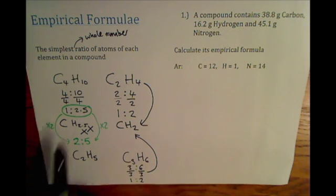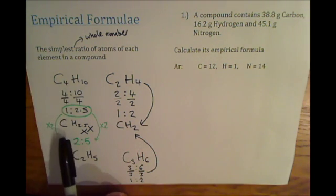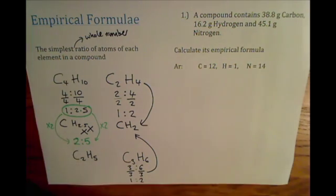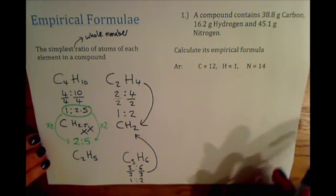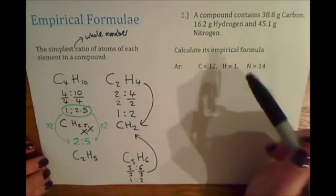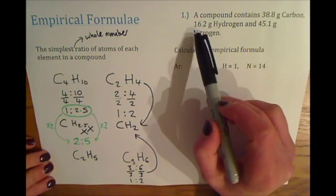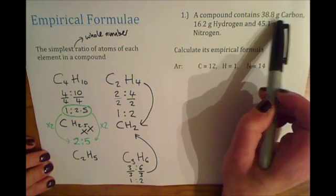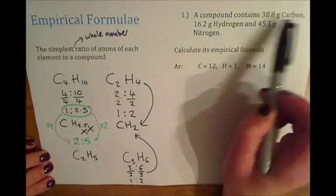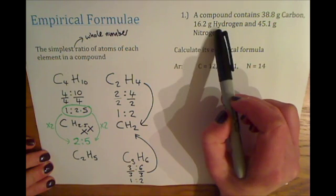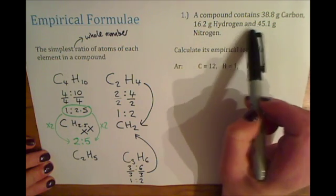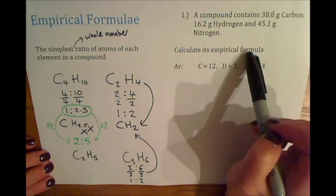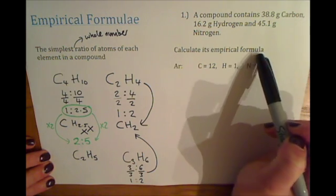You might see compounds in that form and be asked to write the empirical formula. Or you might see it in a longer question form, like this example: a compound contains 38.8 grams of carbon, 16.2 grams of hydrogen, and 45.1 grams of nitrogen. Calculate its empirical formula.